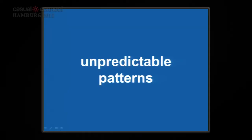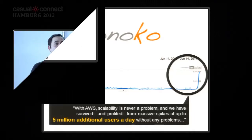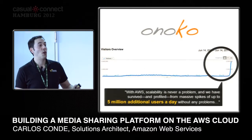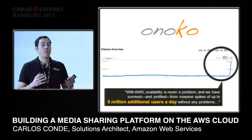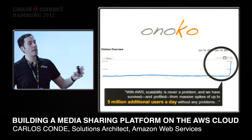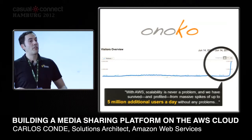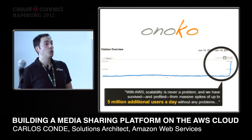It gets even worse with unpredictable patterns. One of our customers built a mobile game on Facebook and a few days after launch had more than two million users — a pretty successful game. They were not prepared for that, but fortunately they ran on the Amazon cloud and could scale, adding enough capacity to sustain this huge number of users.